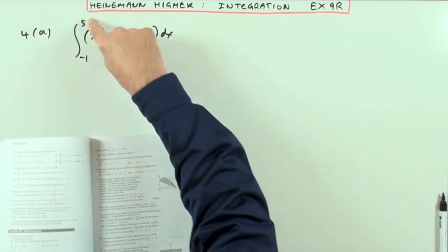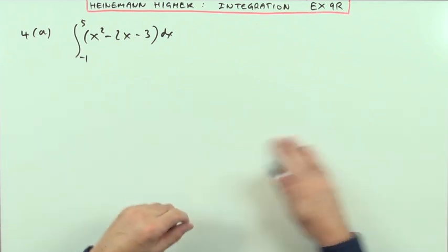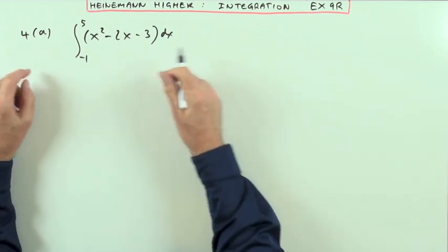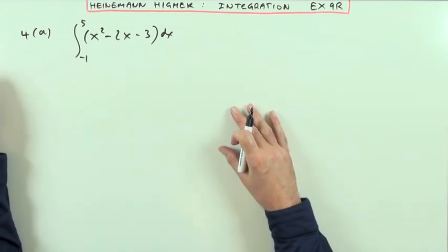Evaluate this definite integral and draw a sketch to explain your answer. Well, that's not strictly correct because the first part says evaluate this definite integral, which may or may not refer to an area in the first place.